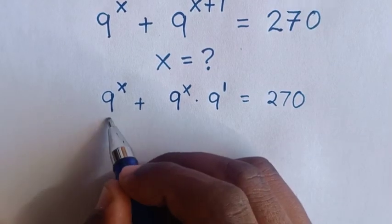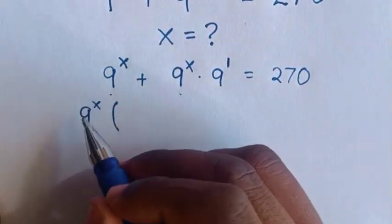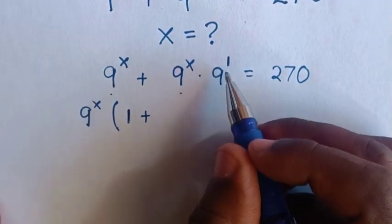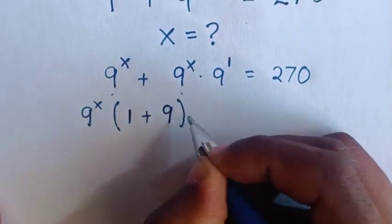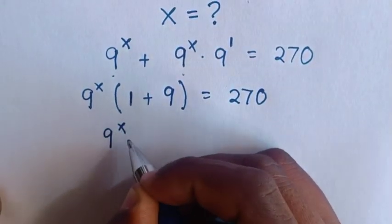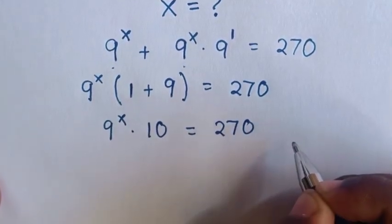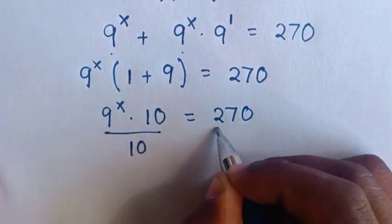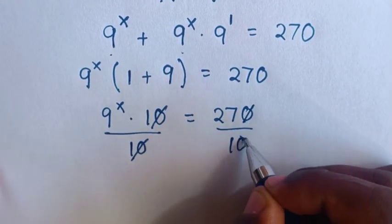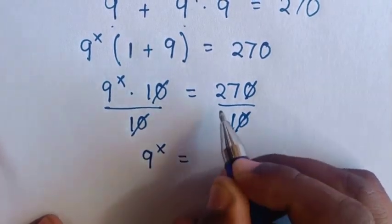9 power x is common, so we take 9 power x out of the bracket: 1 plus 9 power 1, which is the same as 9, bracket is equal to 270. So it will be 9 power x times 10 is equal to 270. Then we divide by 10 on both sides, so 9 power x is equal to 27.